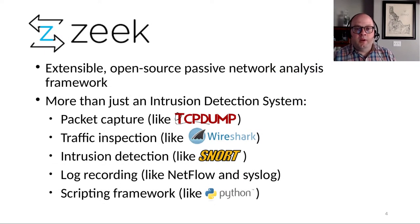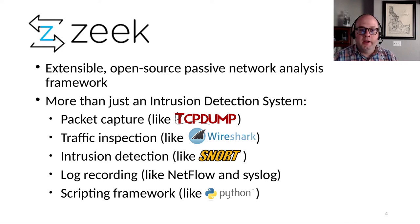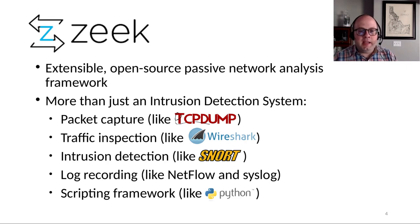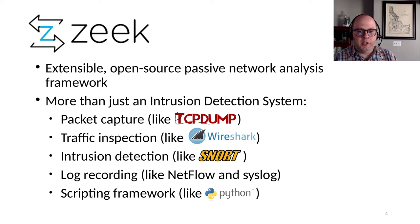Zeek, which was formerly known as Bro, is one of the two PCAP analyzing engines used by Malcolm to generate metadata about network traffic. That metadata is indexed and made searchable through Malcolm's visualization tools. Sometimes referred to as Zeek IDS, it incorporates some techniques from the detection categories we discussed, but Zeek is more than just an intrusion detection system.